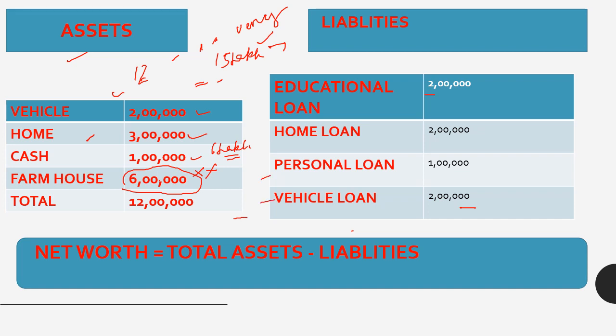In this case your assets are less than your liabilities, so a bankruptcy condition arises. In the future your home or income may also reduce. You still have to pay loans but your assets have decreased. This generates a total insolvency condition.